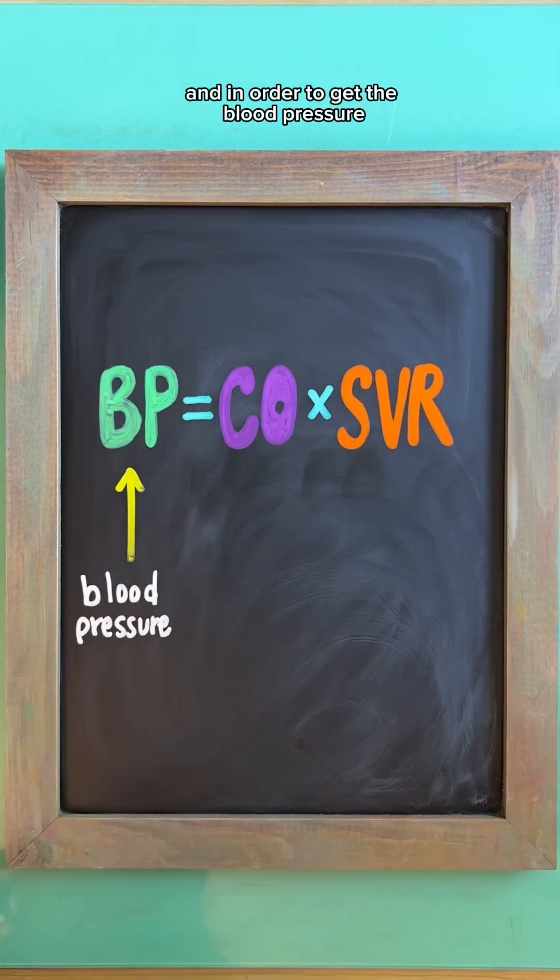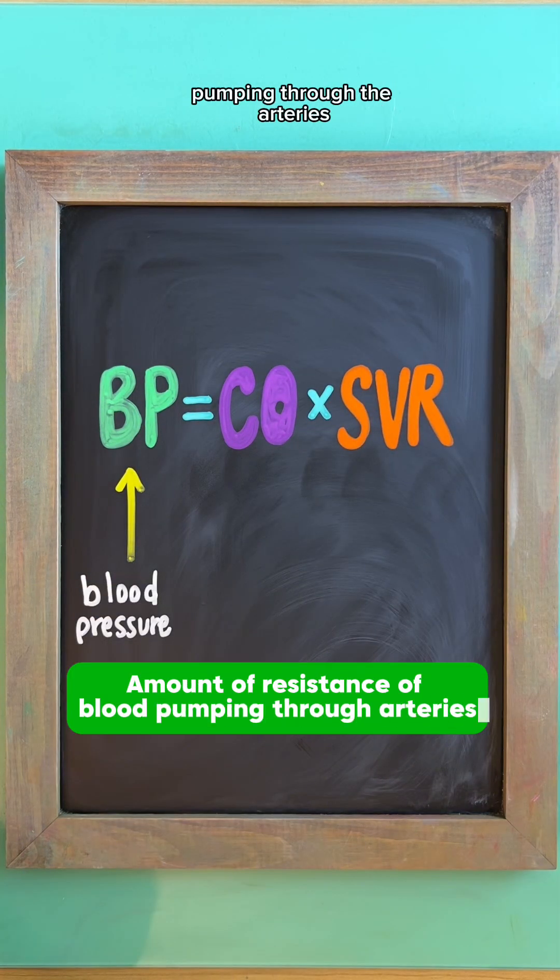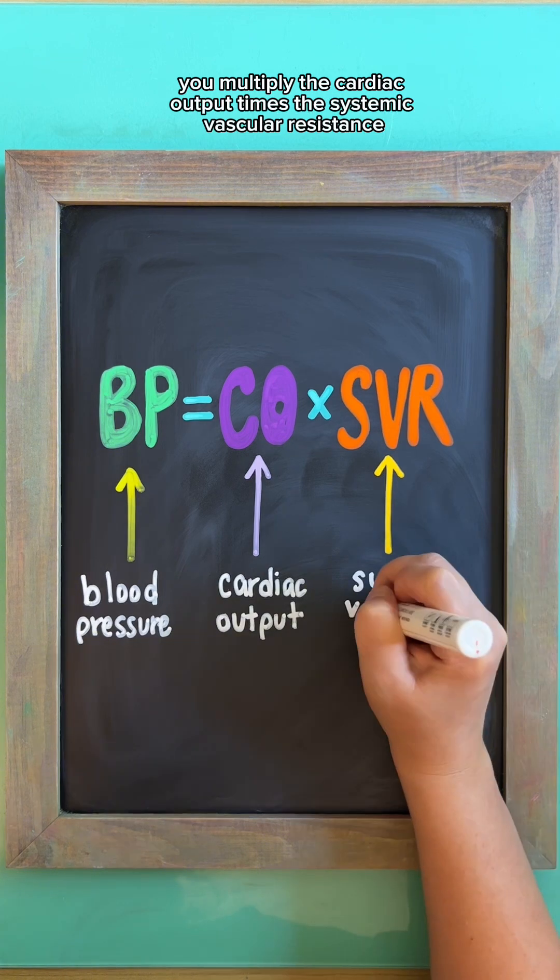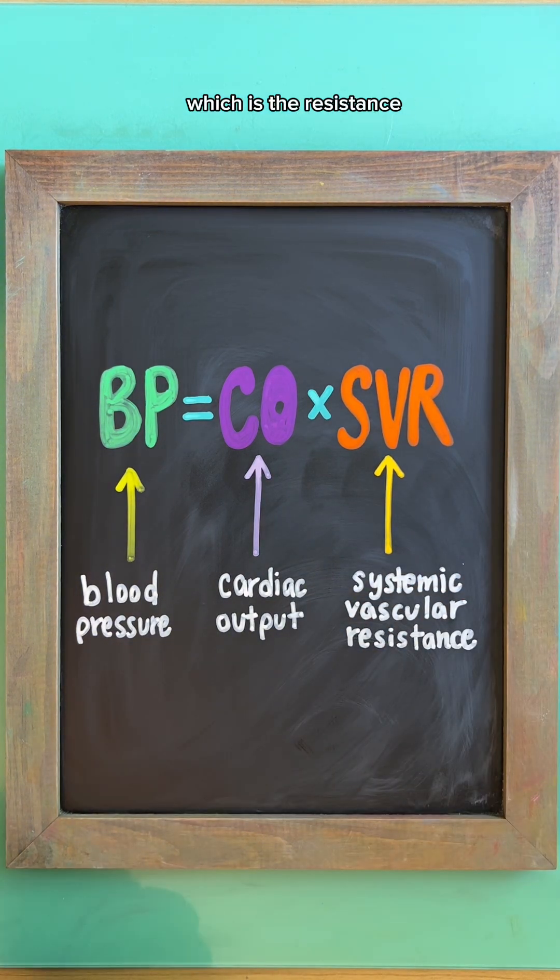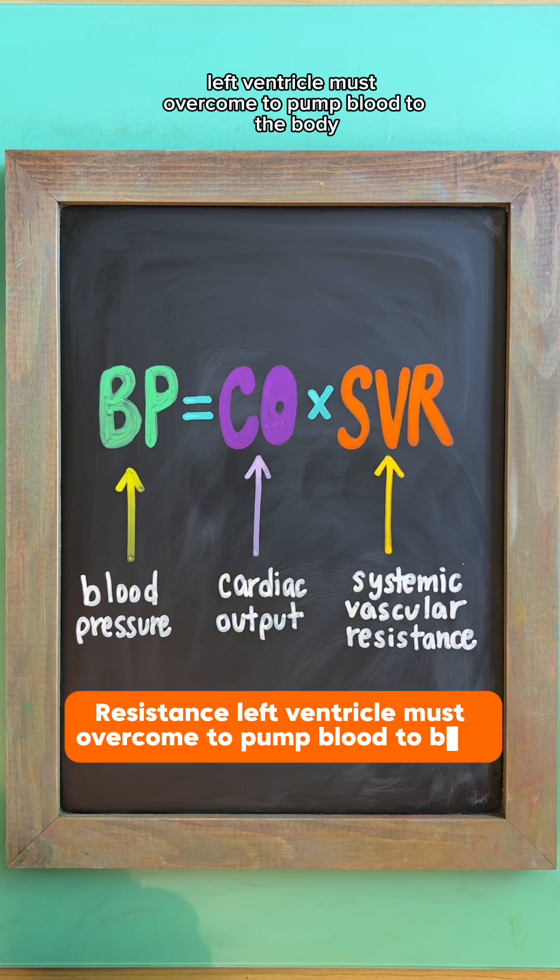And in order to get the blood pressure, which is the amount of resistance of blood pumping through the arteries, you multiply the cardiac output times the systemic vascular resistance, which is the resistance the left ventricle must overcome to pump blood to the body.